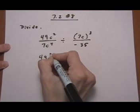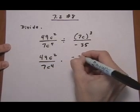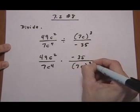So we get 49 c squared over 7 c to the fourth times flip minus 35 over 7 c cubed.